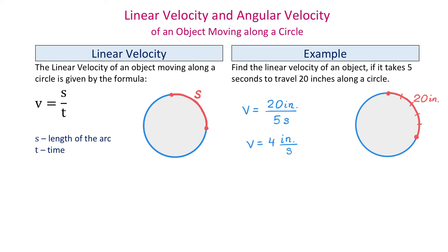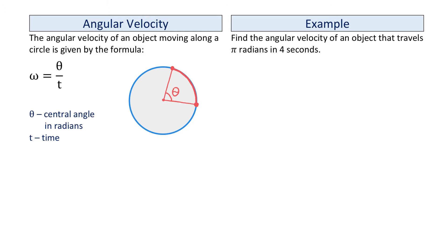Now let's talk about angular velocity. With angular velocity, we have an object moving from one point to another along the circle, and the central angle formed is angle theta. This angle is given in radians, so we can say the object travels theta radians. The angular velocity, denoted by omega, is theta divided by t, where theta is an angle in radians and t represents time.